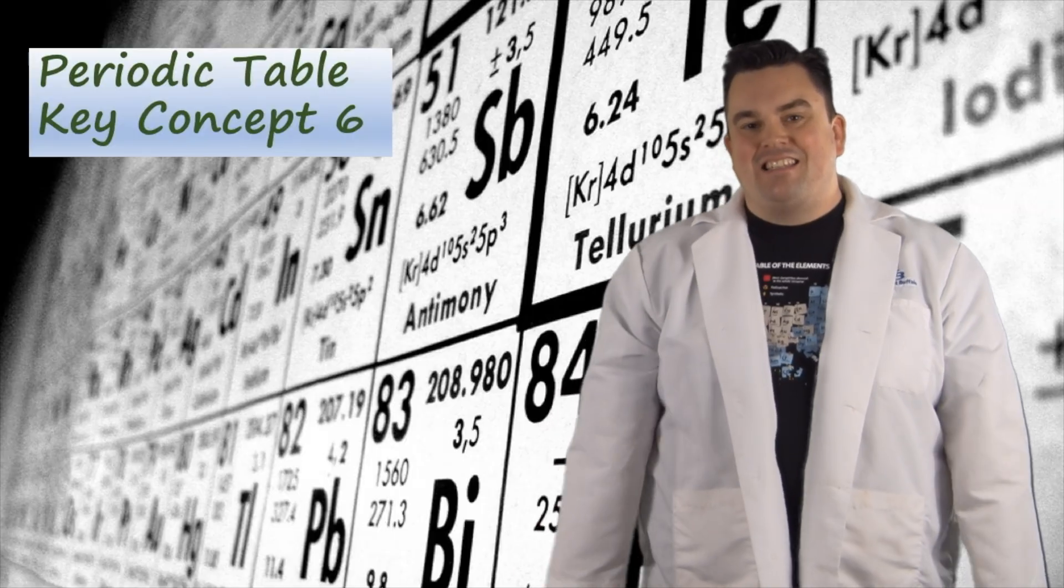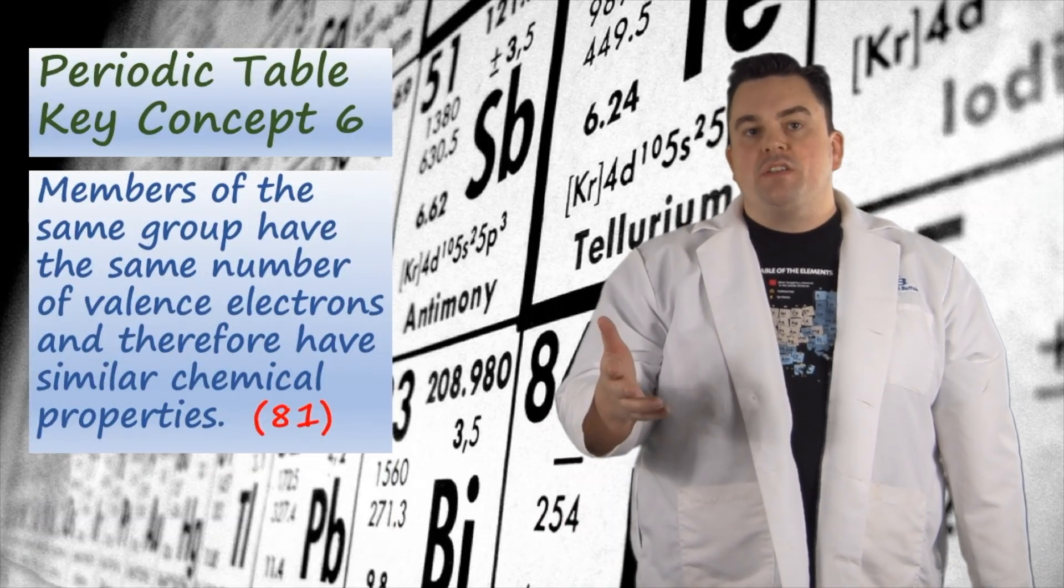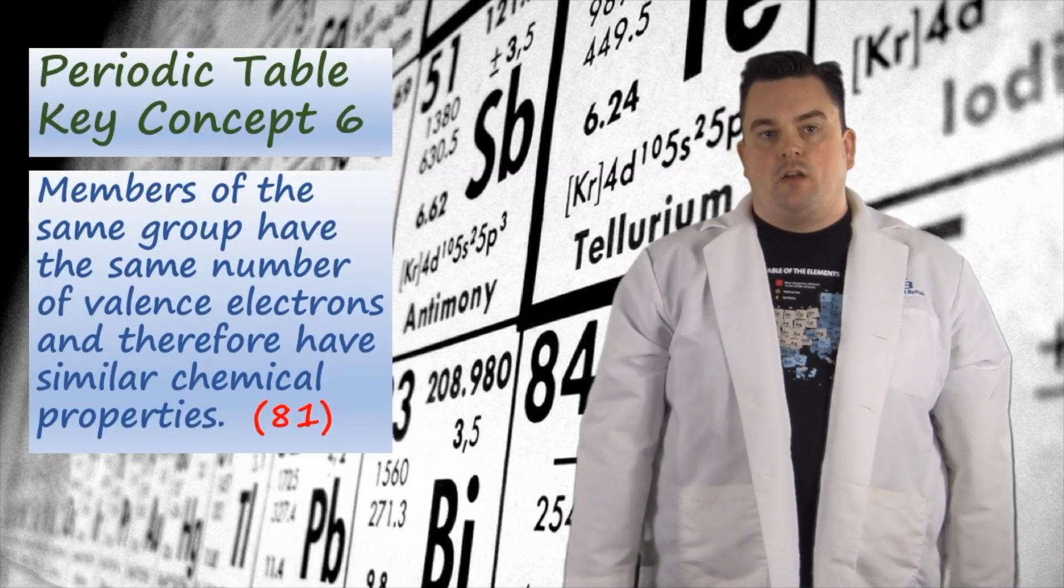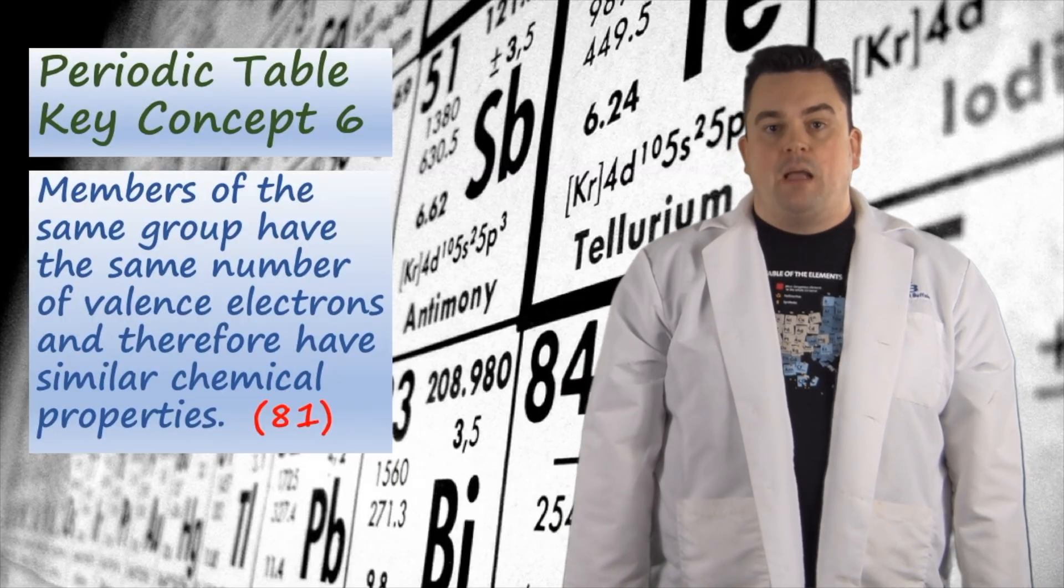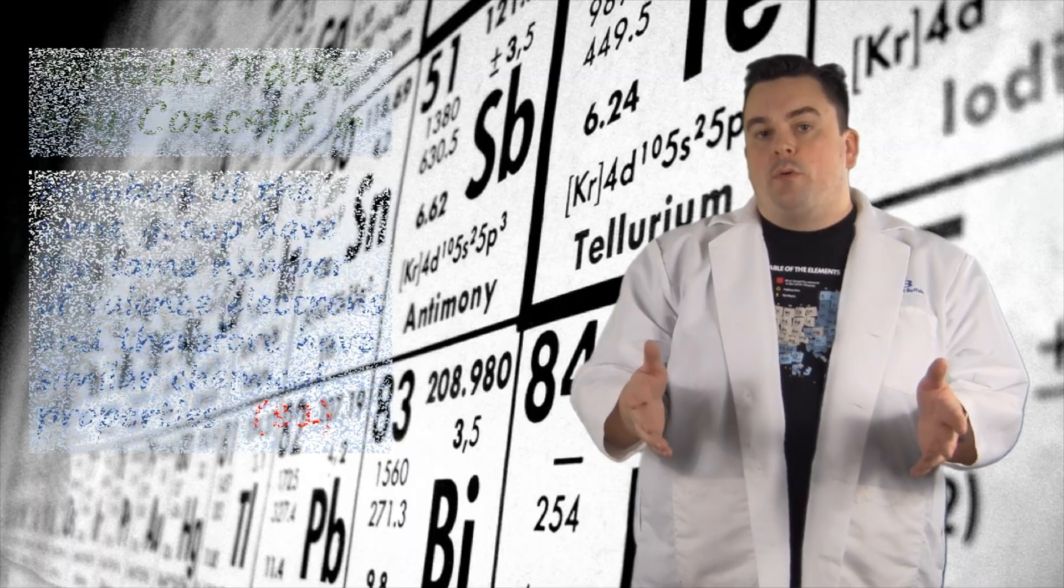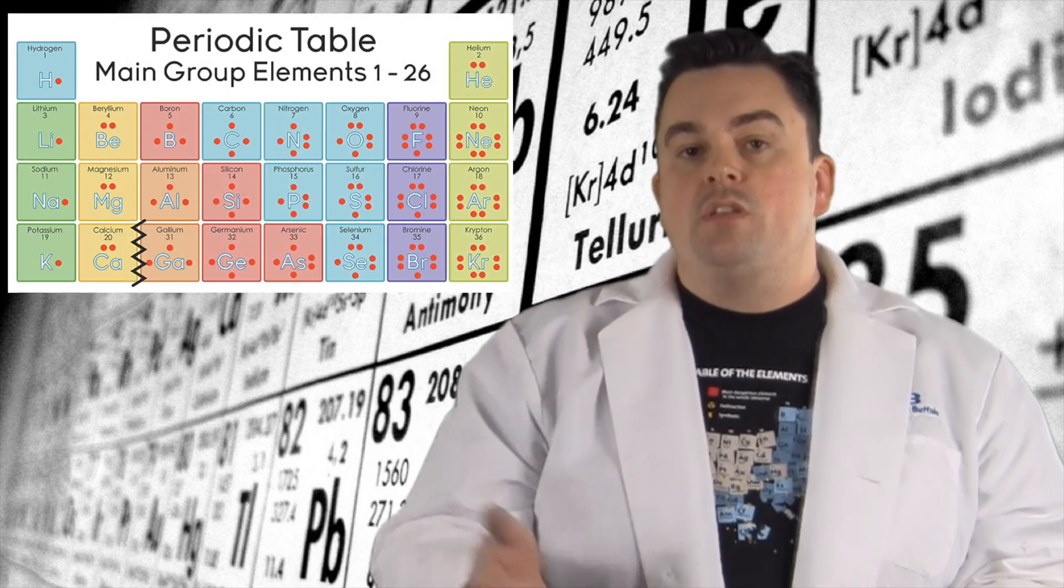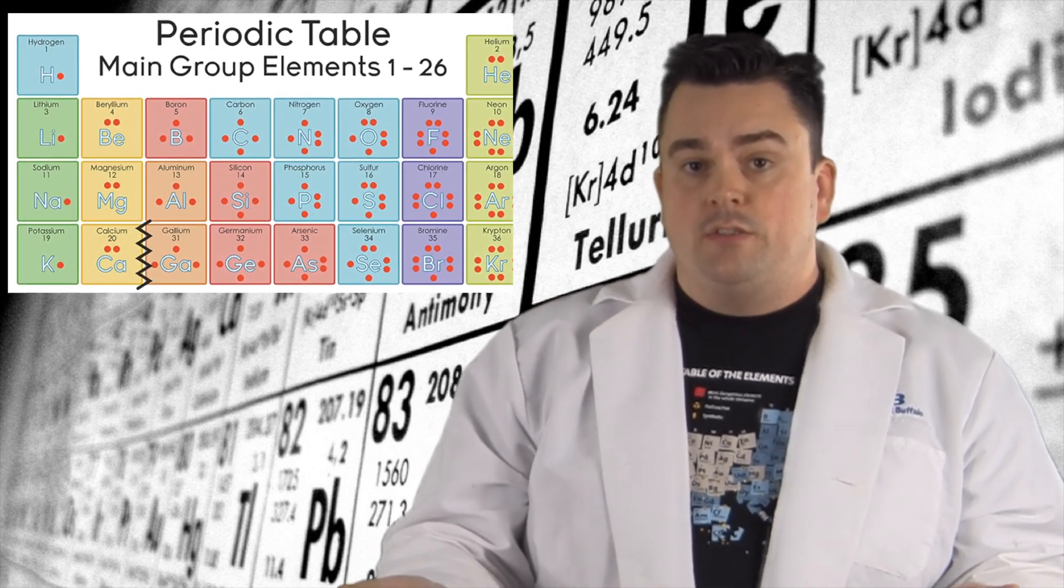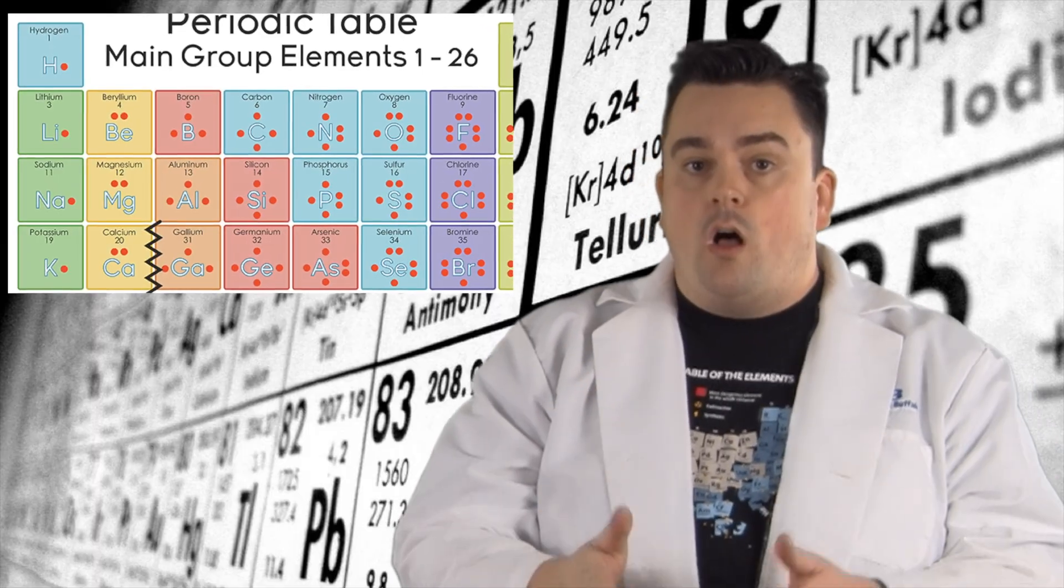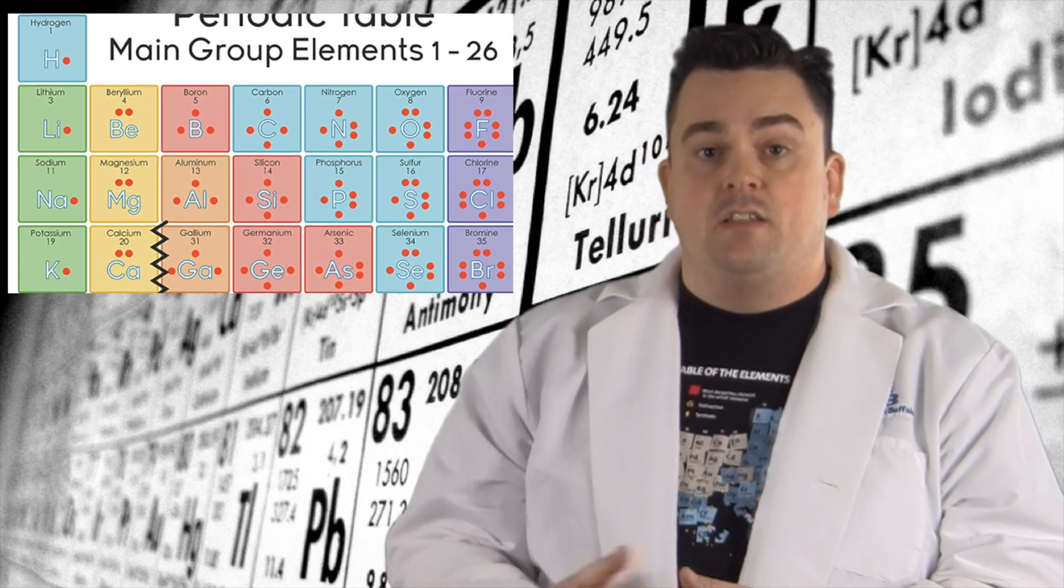Periodic Table Key Concept 6. Members of the same group have the same number of valence electrons, and therefore have similar chemical properties. Now remember, valence electrons can be found in the outermost shell for those elements. Since valence electrons are the electrons that participate in chemical reactions, members of the same group will react in similar ways. For example, members of group 1, the alkali metals, all have one valence electron. So they'll all lose one valence electron.